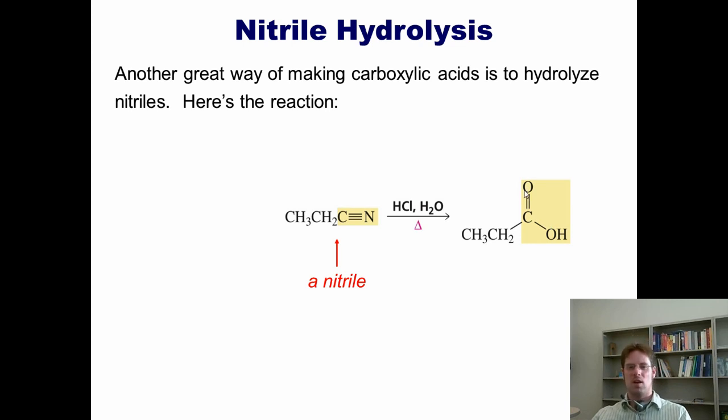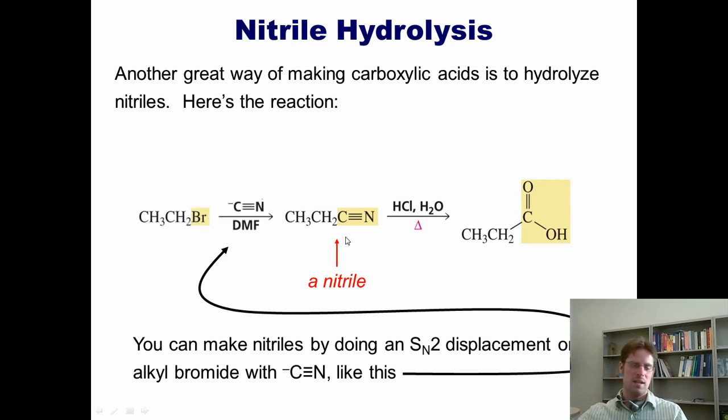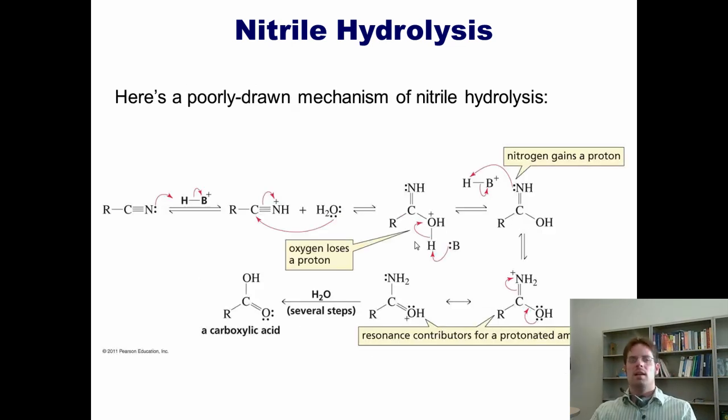Another great way of making carboxylic acids is to hydrolyze nitriles. If I take a nitrile and treat it with acid, water, and heat, I can convert this carbon from a nitrile carbon into a carboxylic acid carbon. You might have forgotten how to even make a nitrile. A very great way is by taking an alkyl bromide and treating it with cyanide nucleophile. The negatively charged carbon comes in, kicks off the bromide leaving group, and gives you your nitrile. So this is an excellent way to take alkyl bromides and convert them in two steps to carboxylic acids. Here's a poorly drawn mechanism of nitrile hydrolysis from our textbook. I'm not going to cover these verbally, but I invite you to look at this mechanism yourselves.